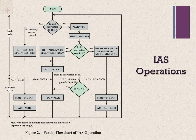Students, please pay special attention to this slide — it is one of the most important slides of the whole course. If you understand this slide, even the complex architectures discussed in coming weeks will become easy to understand. The IAS operates by repeatedly performing an instruction cycle, depicted as a flowchart in figure 2.4. Each instruction cycle consists of two sub-cycles: the first half shows the fetch cycle, and the later half shows the execution cycle.